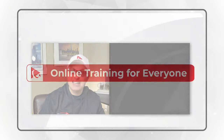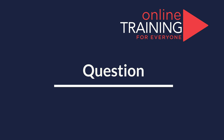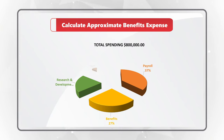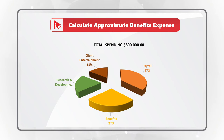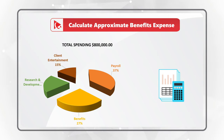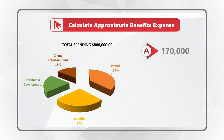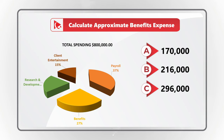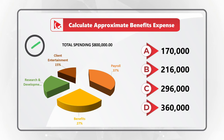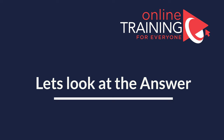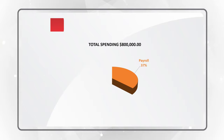Here's an amazing question with an unusual twist testing your knowledge of pie charts. You're presented with total spending for an organization and need to calculate the approximate benefits expense. Along with benefits, you can see payroll expense, research and development expense, and client entertainment. Choose from: A) $170,000, B) $216,000, C) $296,000, or D) $360,000.